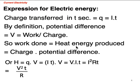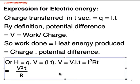So work done is heat energy produced equal to charge multiplied by potential difference, or heat H equal to work done on the free electrons equal to Q into V or VIT. Using Ohm's law, V can be written as IR, so you get I²RT, or you can substitute for I as V over R, which gives you V²T by R.